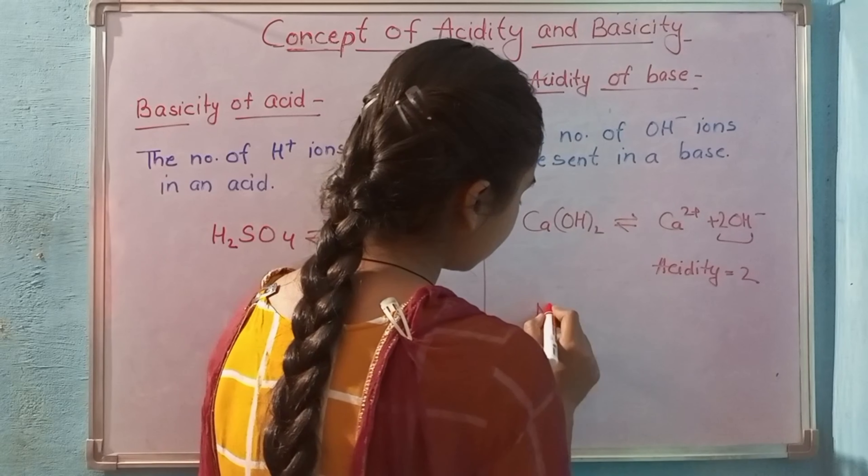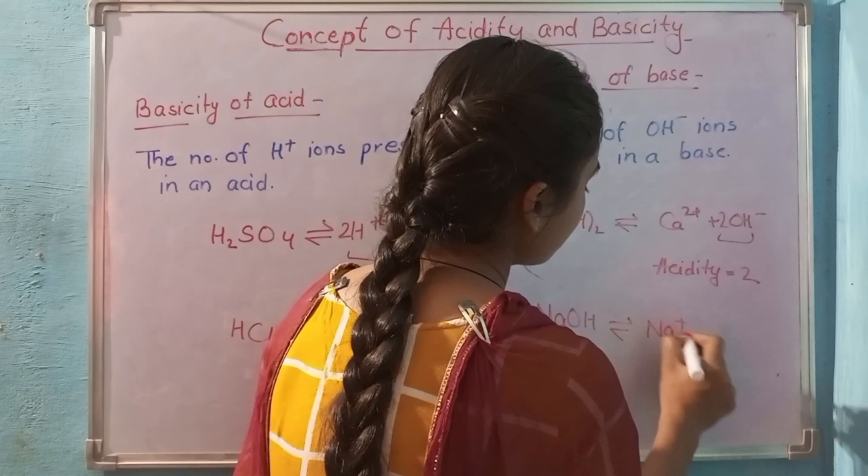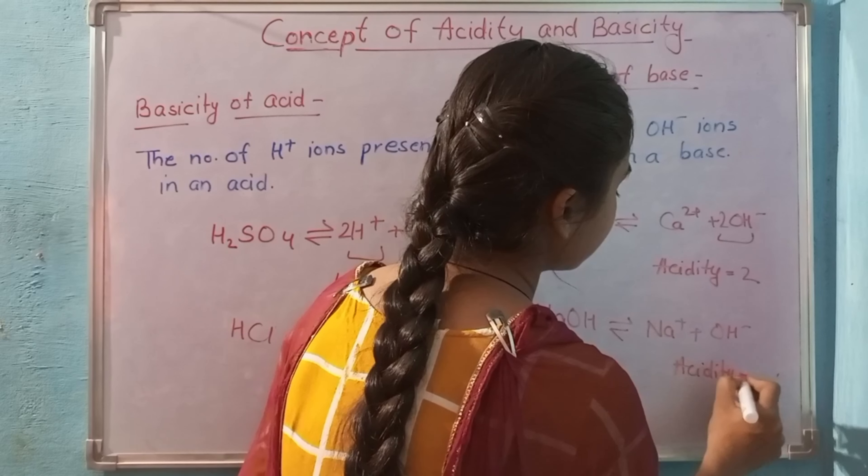If I take an example of NaOH, then NaOH will also be 1. Acidity will be 1 because we also see OH minus 1.